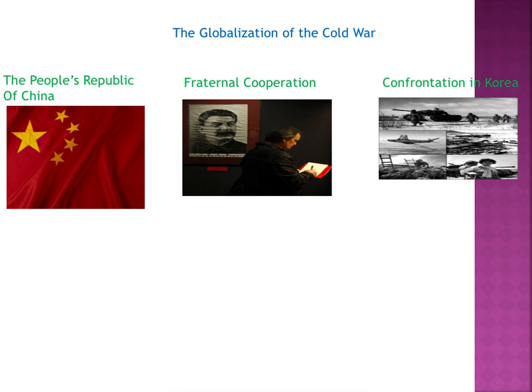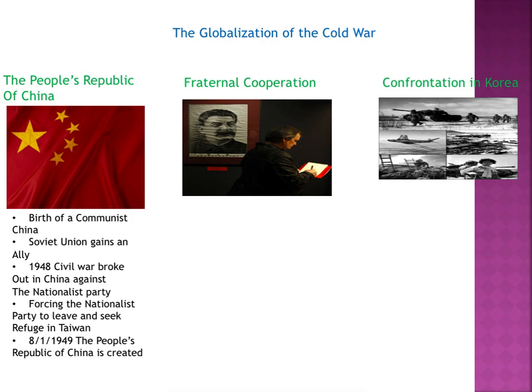When looking at China and the Soviet Union, we see the birth of communist China. Remember that when the Chinese were fighting off the Japanese, the peasants appreciated the communists more because they were making more effort. After the war ended, communism took hold in China and took over. The Soviet Union gained an ally. In 1948 a civil war broke out in China against the Nationalist Party, which brought in the Communist Party, forcing the Nationalist Party to leave and seek refuge in Taiwan. By August 1st, 1949, the People's Republic of China was officially created.